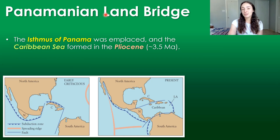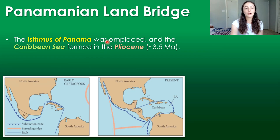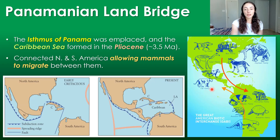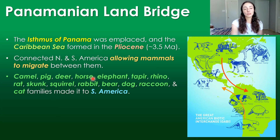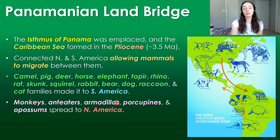Another major geological event was the formation of the Panamanian land bridge — the connection between North and South America. This occurred during the Pliocene around 3.5 million years ago, and it allowed the migration of mammals between these two continental masses. Camel, pig, deer, horse, elephant, tapir, rhino, rat, skunk, squirrel, rabbit, bear, dog, raccoon, and cat families made it to South America from North America, and monkeys, anteaters, armadillos, porcupines, and possums spread to North America.